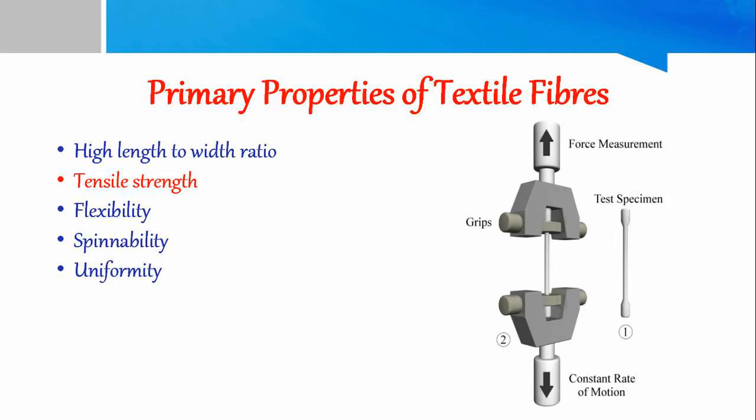For example, cotton is 4.0 grams per denier, silk is 4.5 grams per denier, wool is 1.5 grams per denier, and rayon is 1.5 to 2.4 grams per denier. Some fibers gain strength when they are wet, some lose strength, and some are unaffected by water.